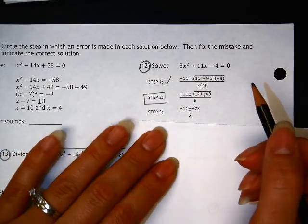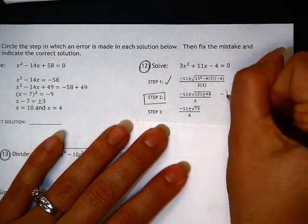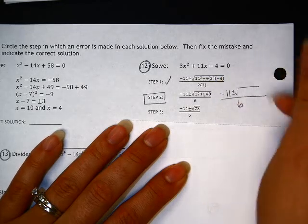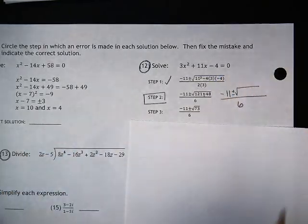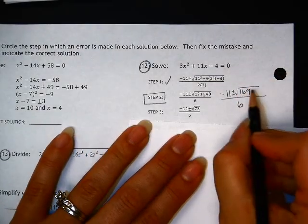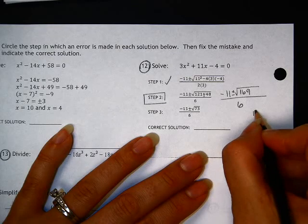So step two is definitely the problem that we have. So what we should have had was 121 plus 48, which is 169. And the square root of 169 is a fantastic little 13.